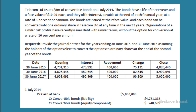The question: issue five million of convertible bonds — that's the face of the instrument, not necessarily how much was paid or lent. The bonds have a three-year life and a face value of ten dollars each. They offer interest payable at the end of each financial year at a rate of eight percent — so we've got the coupon. The bonds are issued at face, and each bond can be converted into one ordinary share in Telecom at any time, so we have a conversion option.